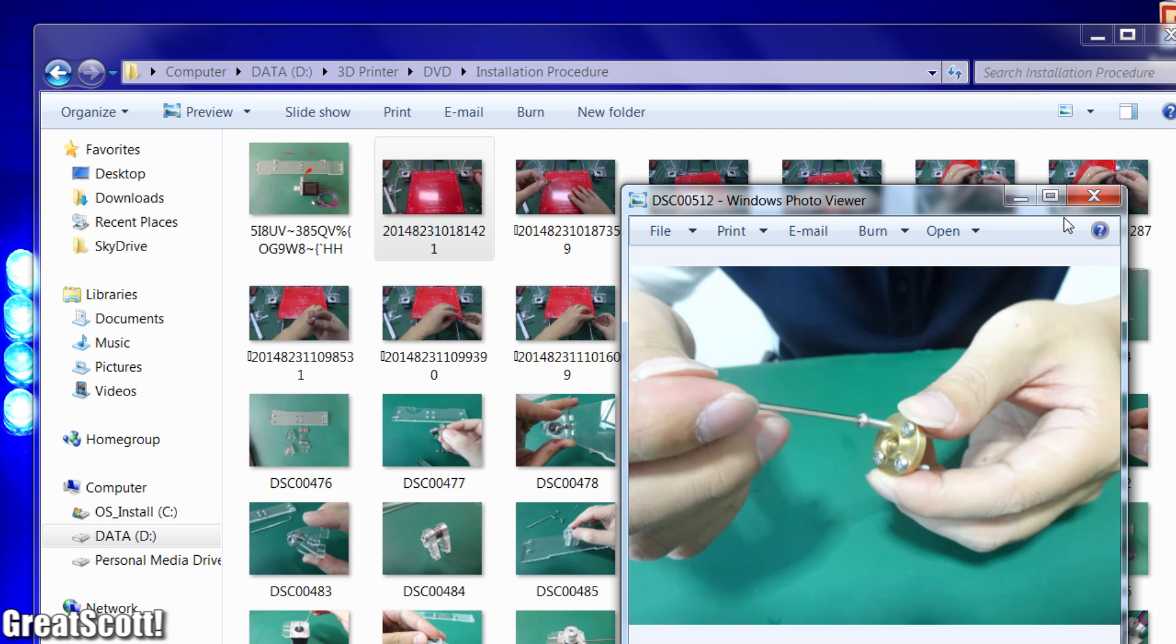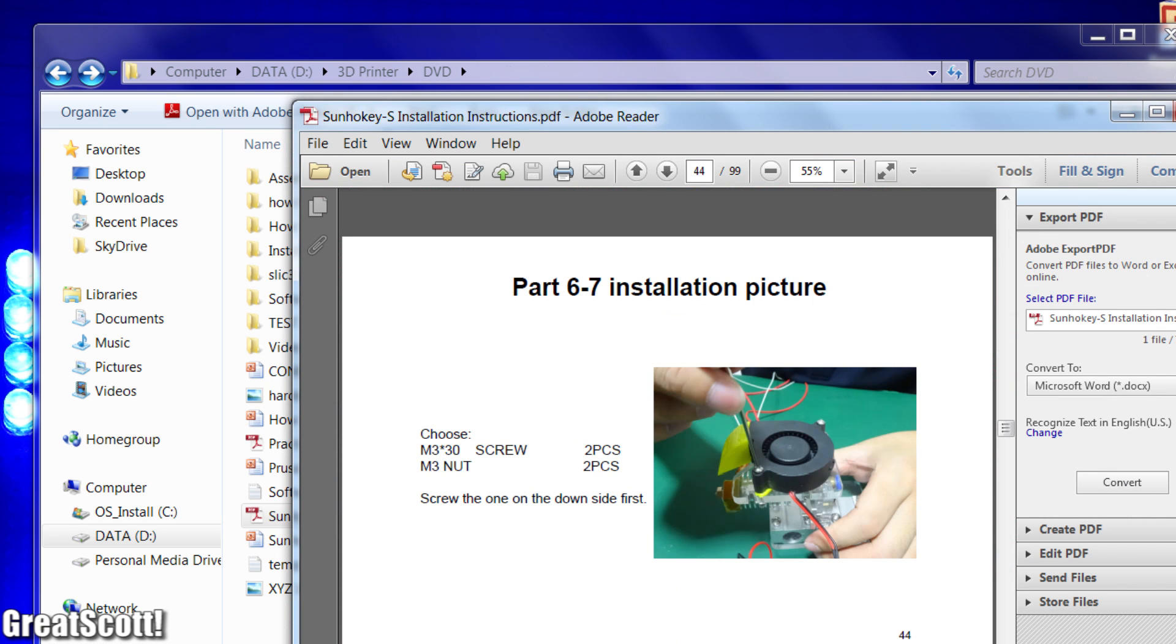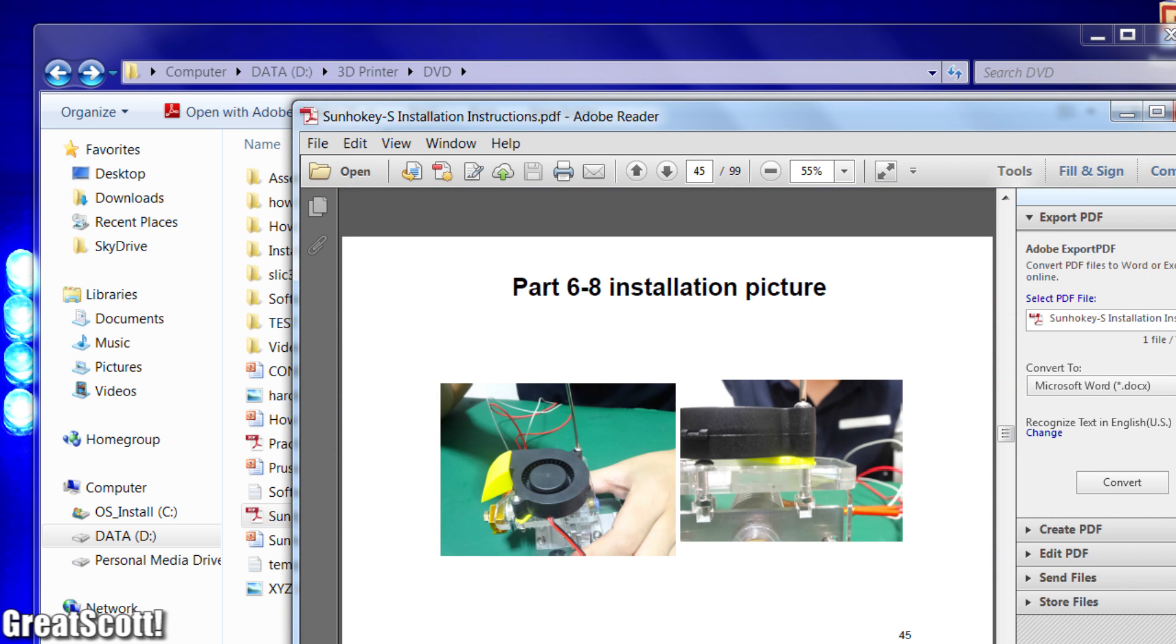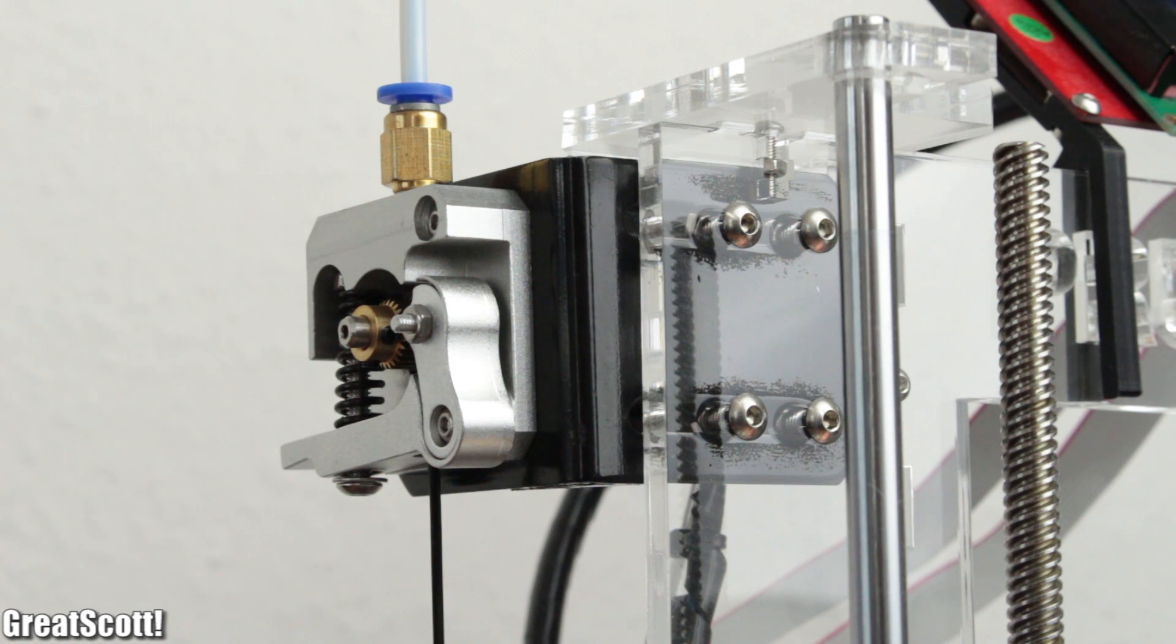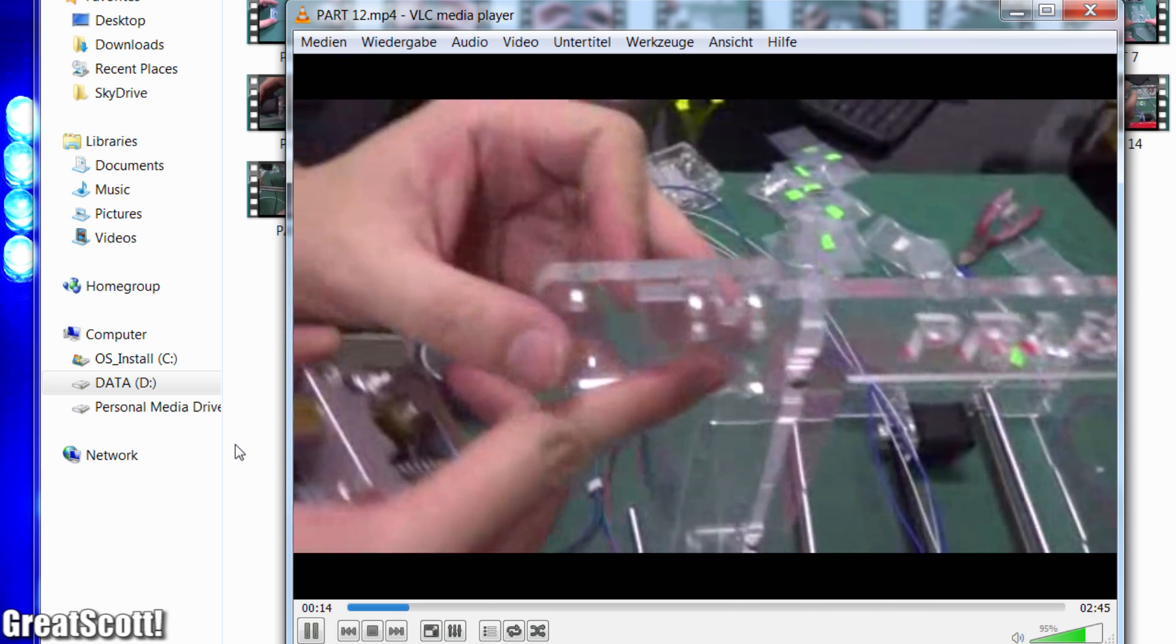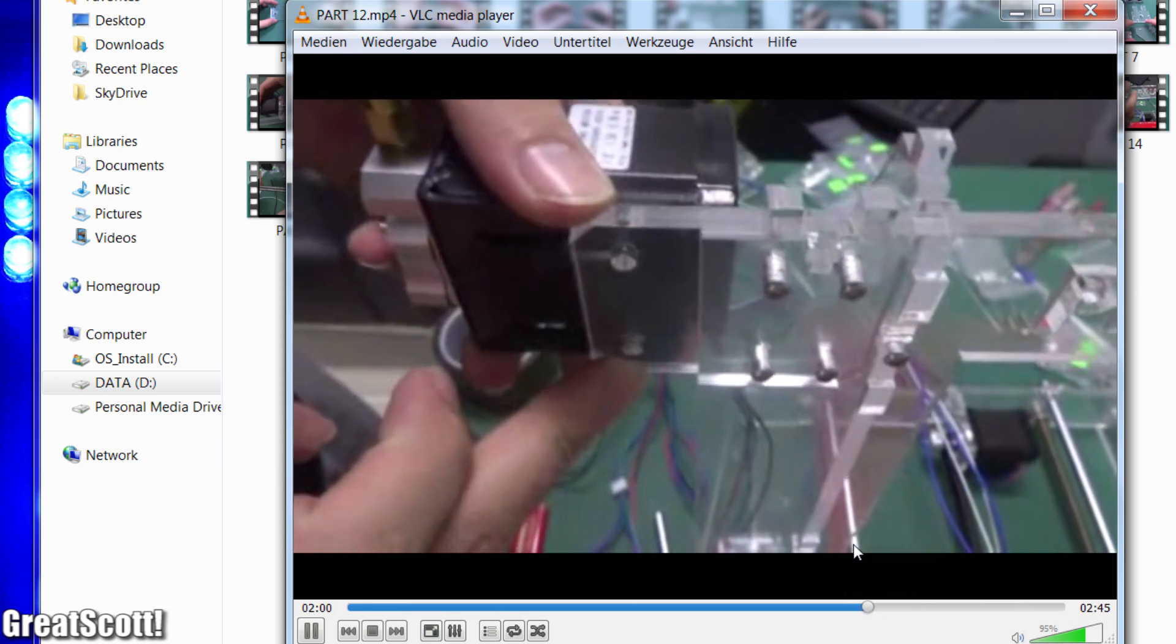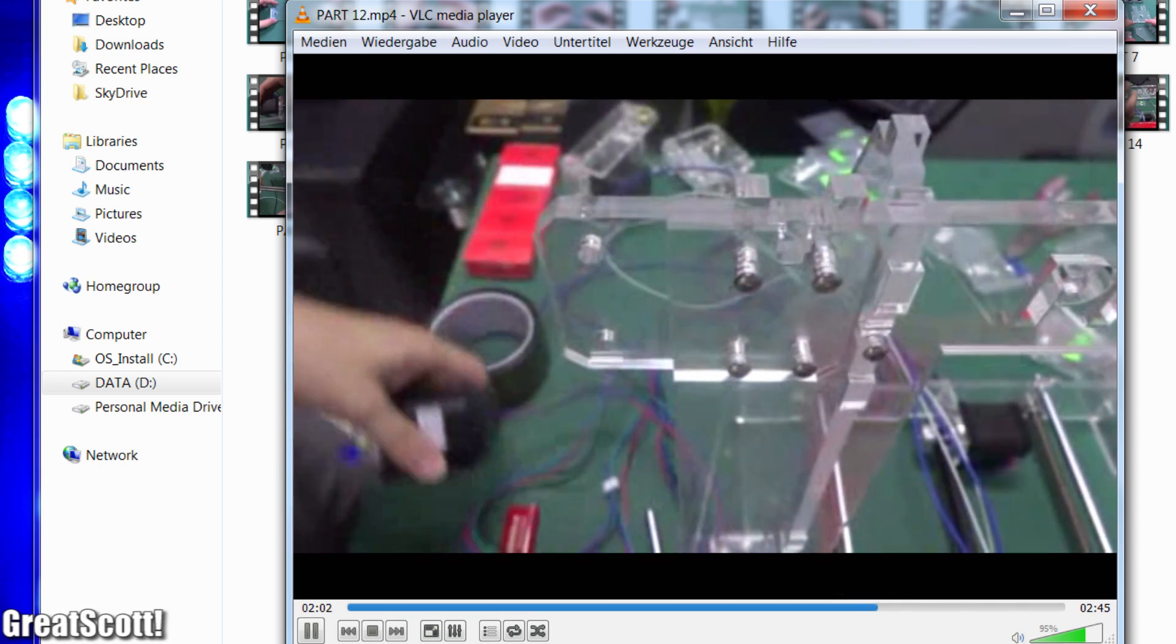Especially at the end important steps were just missing because the instructions were not updated properly over time. This extruder motor is a good example. In the video they show you that you need another part to connect it to the mainframe. But here's the surprise.